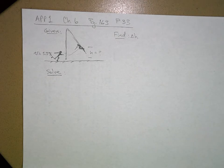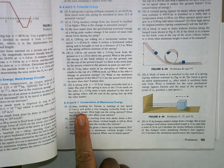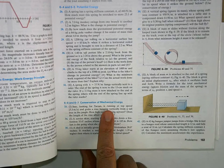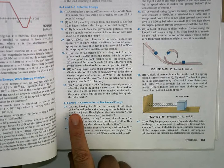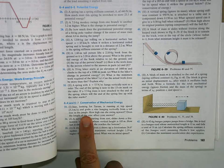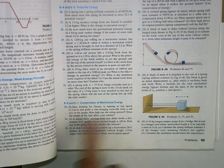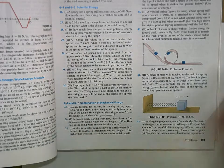Let's do problem number 33 on page 163 in chapter 6. You will read the problem. It's number 33. Jane, looking for Tarzan, is running at a top speed of 5.3 meters per second and grabs a vine hanging vertically from a tall tree in the jungle. How high can she swing upward? Does the length of the vine affect your answer?